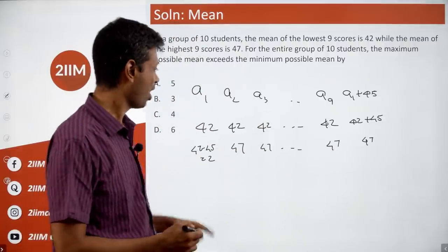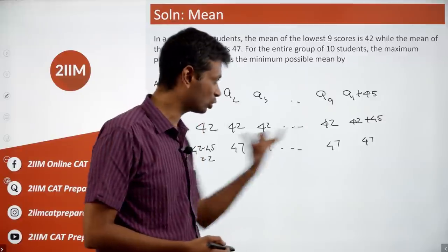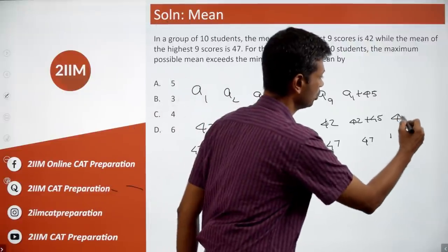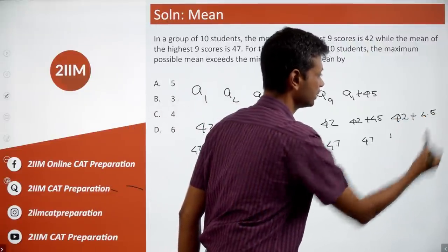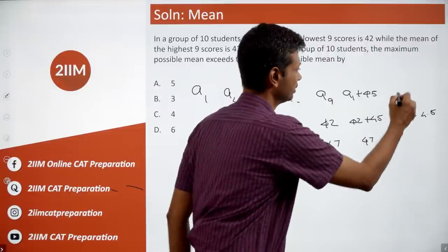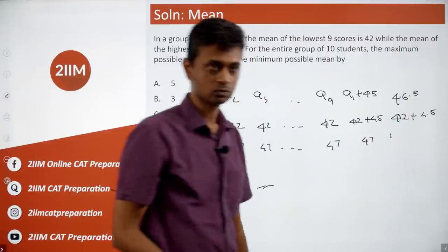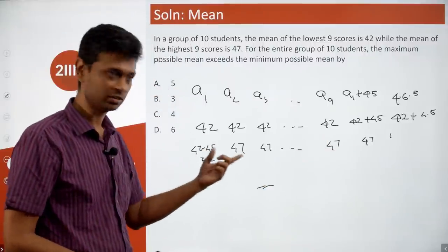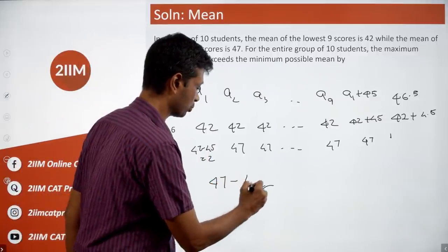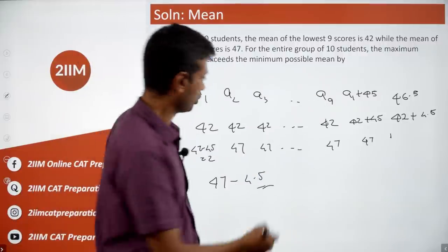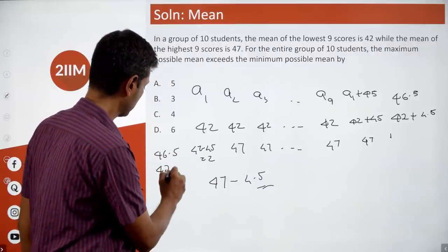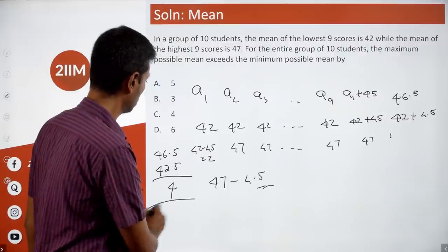In the first case (all equal to 42, A10 = 87): average = 42 + 45/10 = 46.5. In the second case (all equal to 47, A1 = 2): average = 47 − 45/10 = 42.5. The difference is 46.5 − 42.5 = 4. That is the answer.